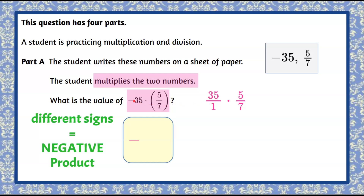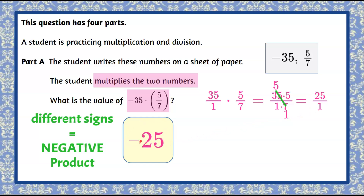Let's rewrite this. 35 I'm going to write as a fraction: 35 over 1, multiplied by 5 over 7. I prefer to simplify before I multiply. I see that both 35 and 7 are divisible by 7. So let's divide 35 by 7, which is 5, and 7 by 7, which is 1. Now let's multiply: the numerator 5 times 5 is 25, the denominator 1 times 1 is 1. And 25 over 1 is 25, and we already predetermined the product would be negative. So the answer to part A is negative 25.